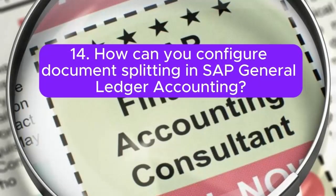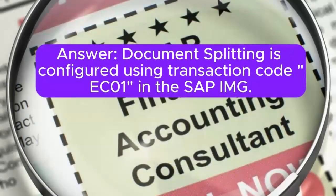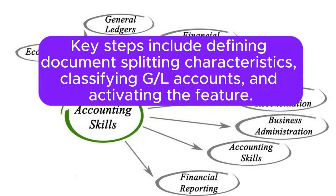Question 14: How can you configure document splitting in SAP General Ledger accounting? Answer: Document splitting is configured using transaction code ECHO1 in the SAP IMG. Key steps include defining document splitting characteristics, classifying General Ledger accounts, and activating the feature.